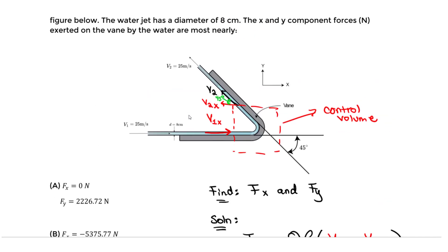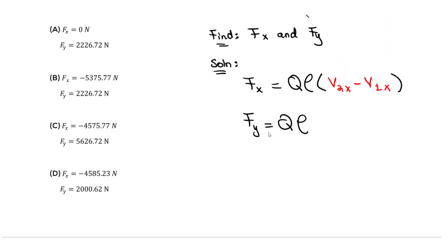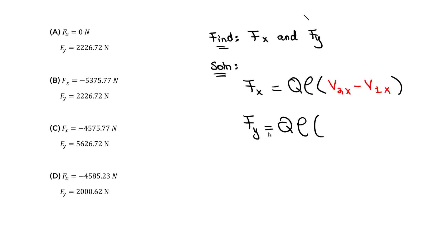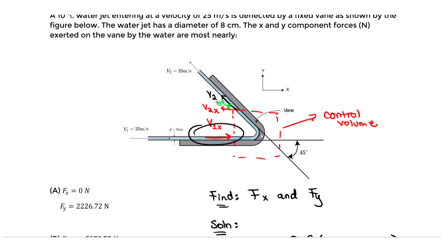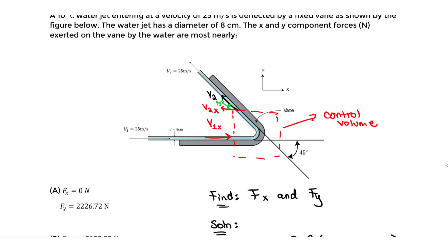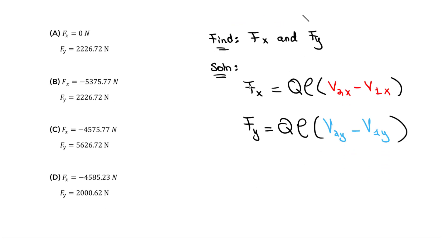For Fy, Q does not change because the entry and exit speeds are equal. The equation becomes Fy equals ρQ times (V2y minus V1y). Since V1 enters strictly horizontally, V1y equals zero. V2y is positive since the flow exits upward, equal to V2 times sine of 45 degrees, which is 25 times sine of 45 degrees.